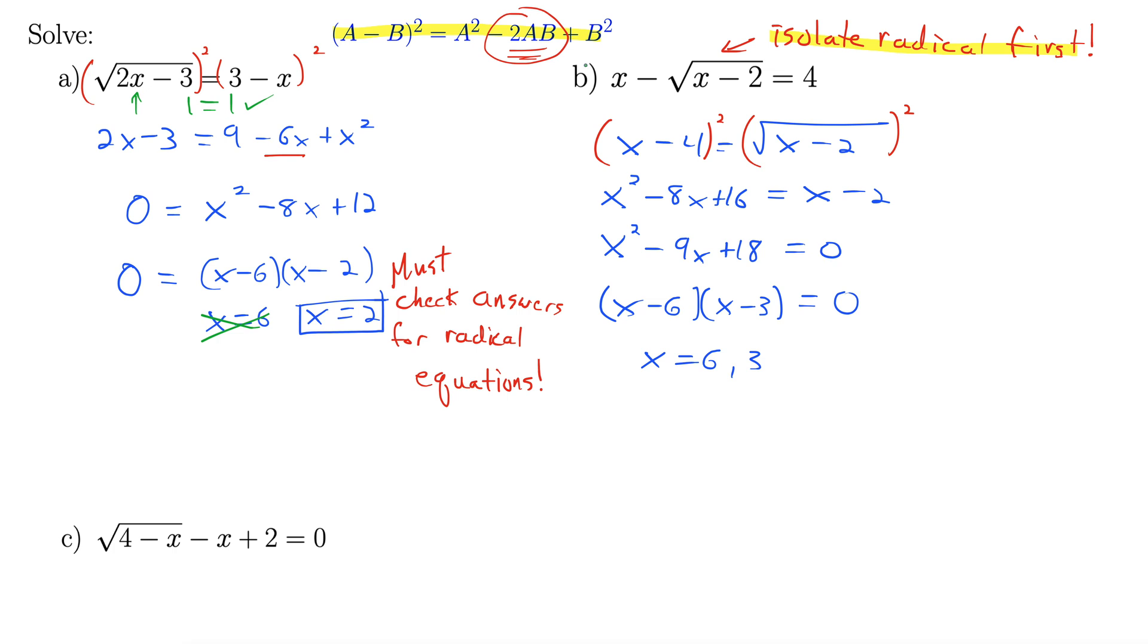Remember to check our answers. So let's see. Let's plug in 6. 6 minus the square root of 6 minus 2, which is 4. Does that equal 4? Well, yes it does. 6 minus 2 is 4. Check. So 6 is good.